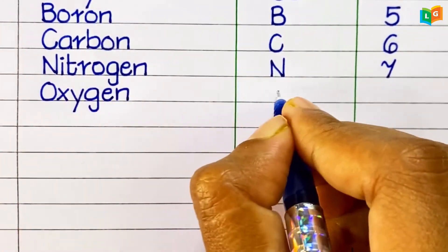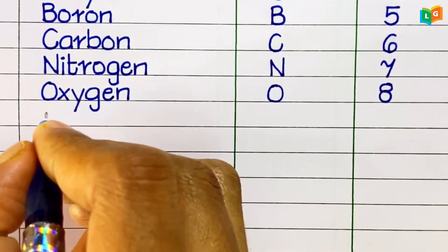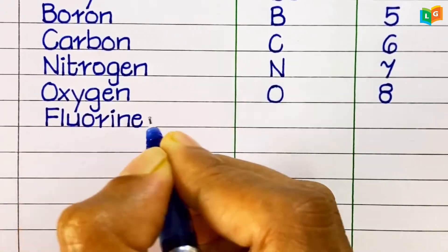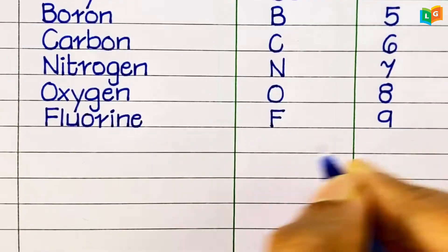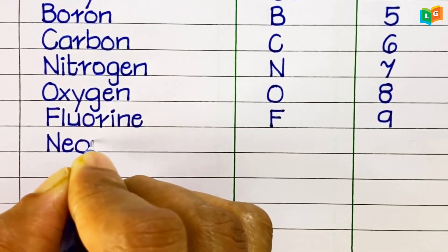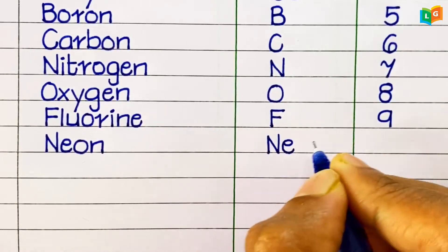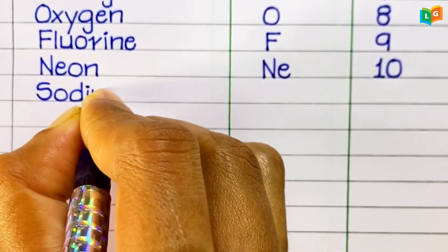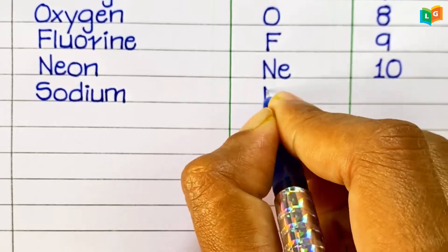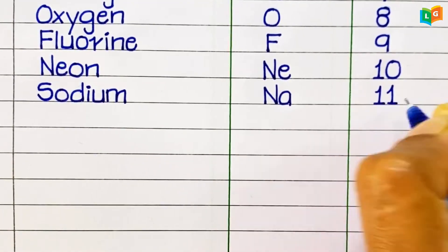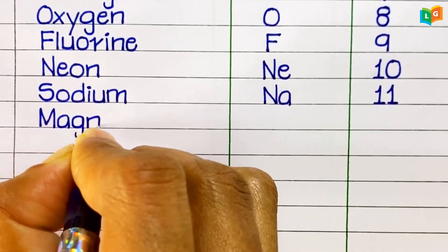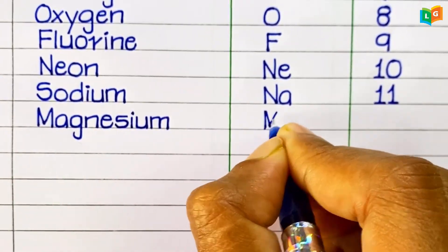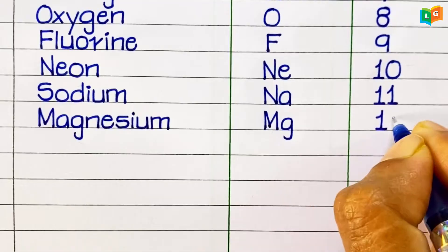Oxygen, symbol O, atomic number 8. Fluorine, symbol F, atomic number 9. Neon, symbol Ne, atomic number 10. Sodium, symbol Na, atomic number 11.